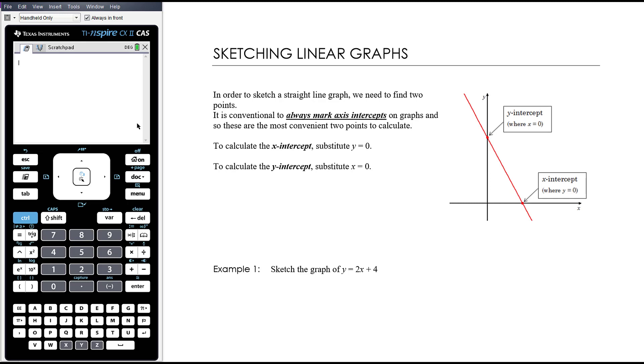It's conventional for all graph types - linear, quadratic, cubic, hyperbola, truncus, whatever - every single graph type we'll ever draw, and we'll draw a lot of them this year, we always mark axis intercepts. The question doesn't need to specify that. If the graph is crossing an axis it should be very clear what the coordinates of that point are.